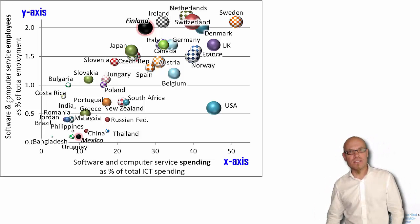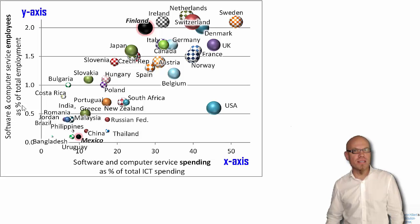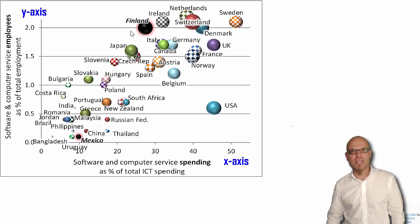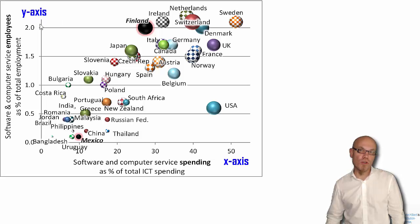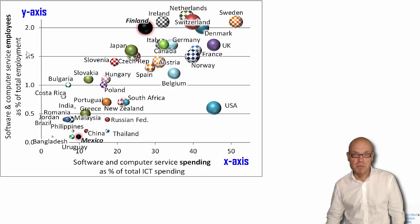On the y-axis, you have the number of software and computer service employees as a percentage of total employment. That means, for example, here in Finland, we have two percent of the total employment working in software and computer services.